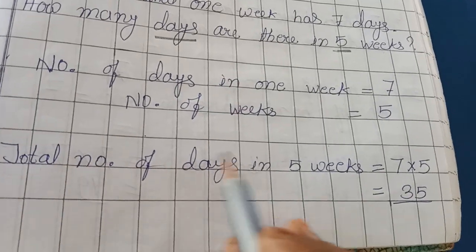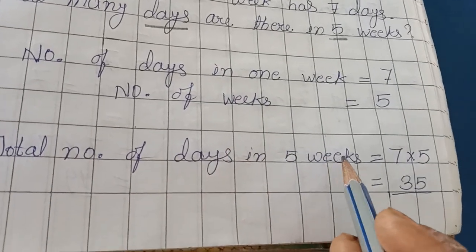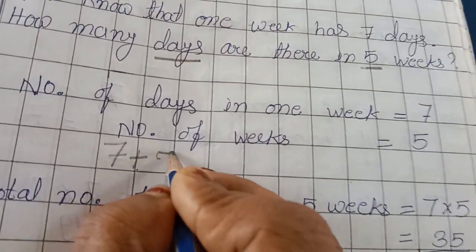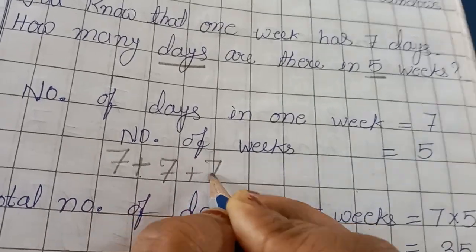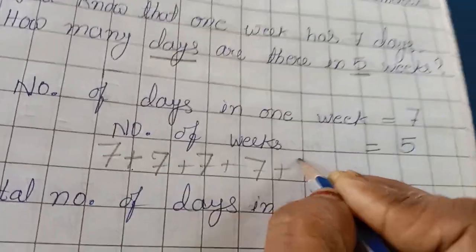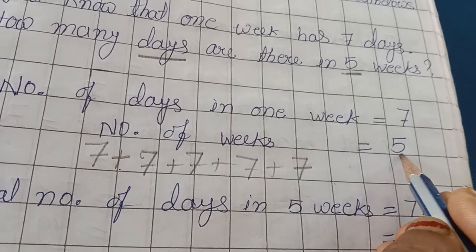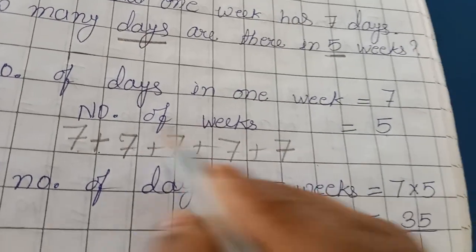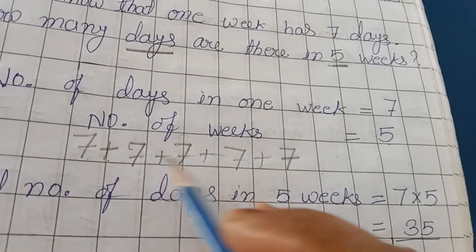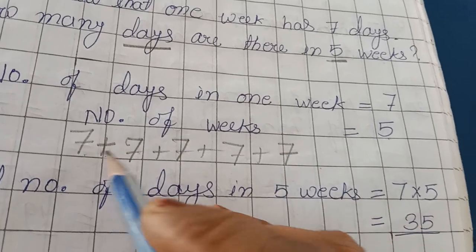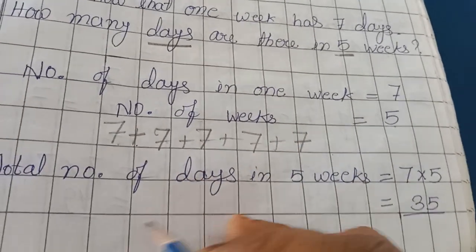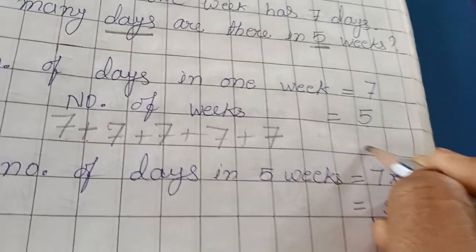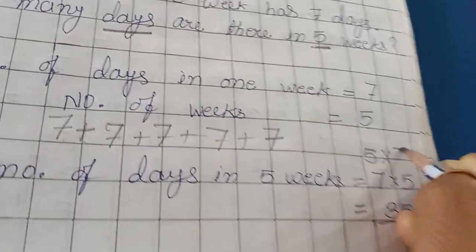So here we will find out the total number of days in five weeks. One week — seven days, second week — seven, third — seven, fourth week — seven, fifth week — seven. We need to add seven five times. So total number of days will be seven times five, or five times seven, which equals thirty-five.